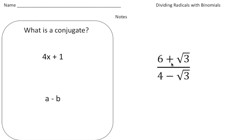So here we have the problem: 6 plus radical 3 divided by 4 minus radical 3. In order to simplify this or divide this, we need to rationalize the denominator, because notice we have the square root of 3 in the denominator and we need to get rid of that. So in order to do that, you have to know what something called a conjugate is, and a conjugate basically is when you change the sign in the middle of two terms.